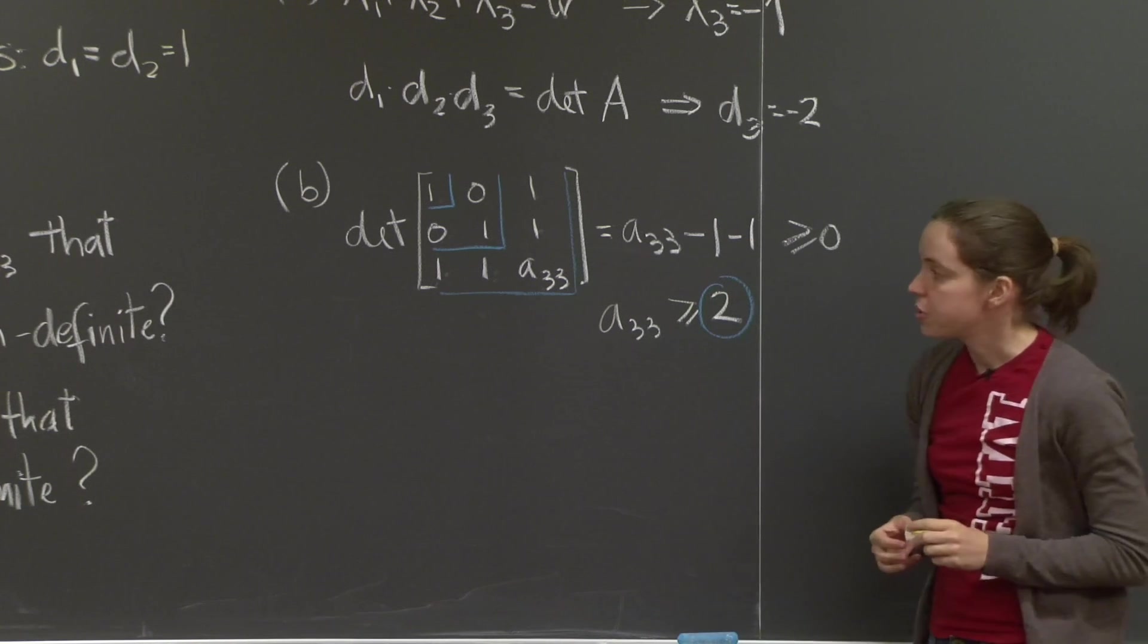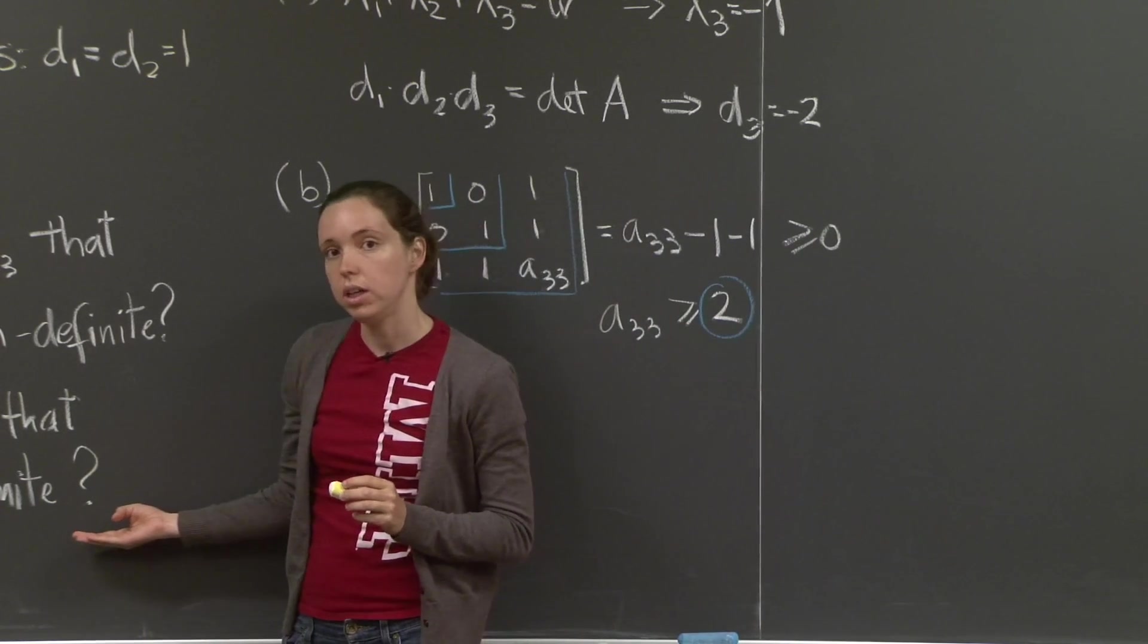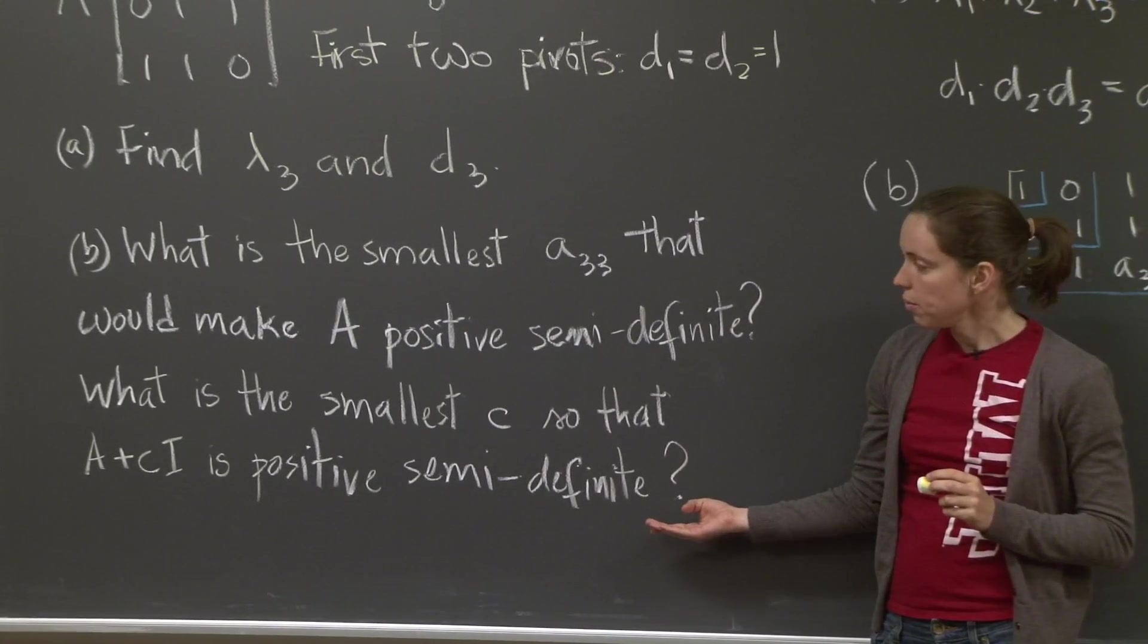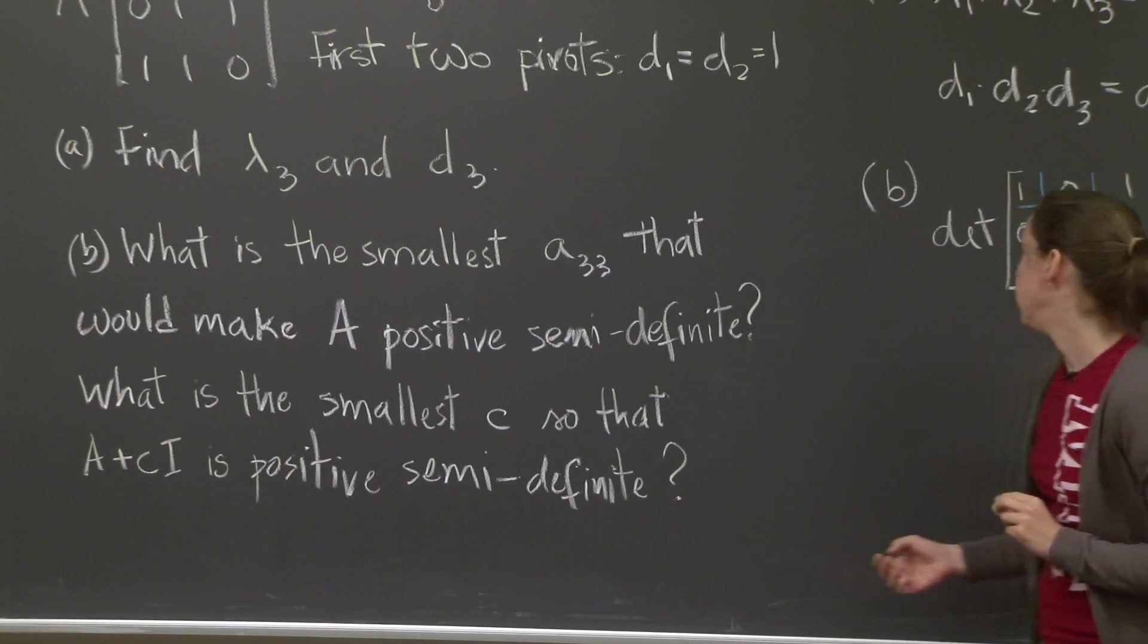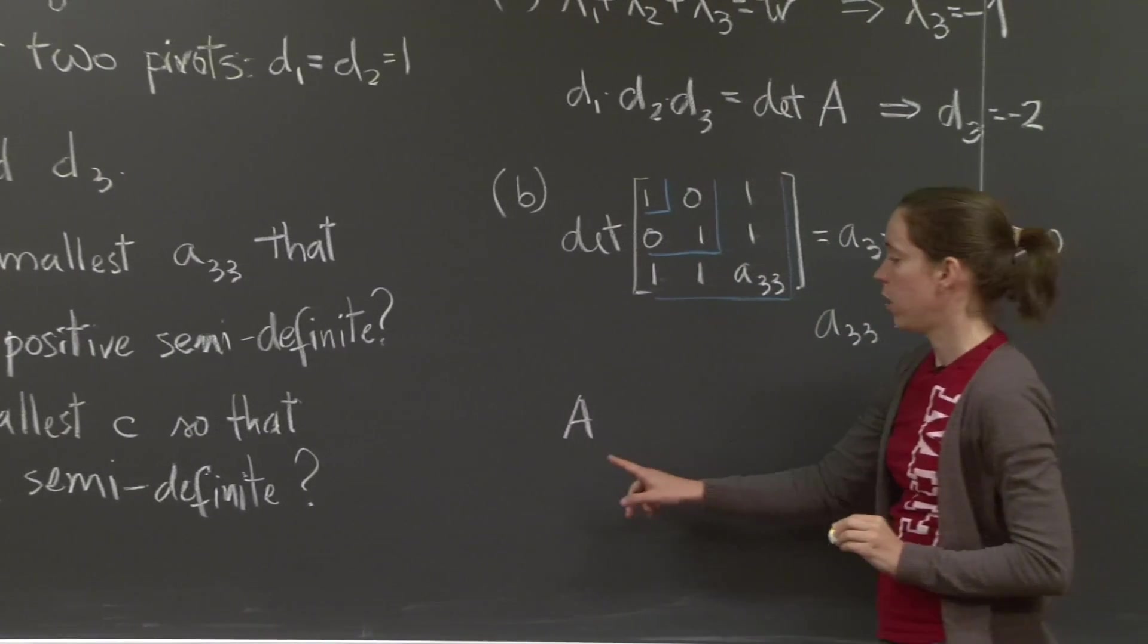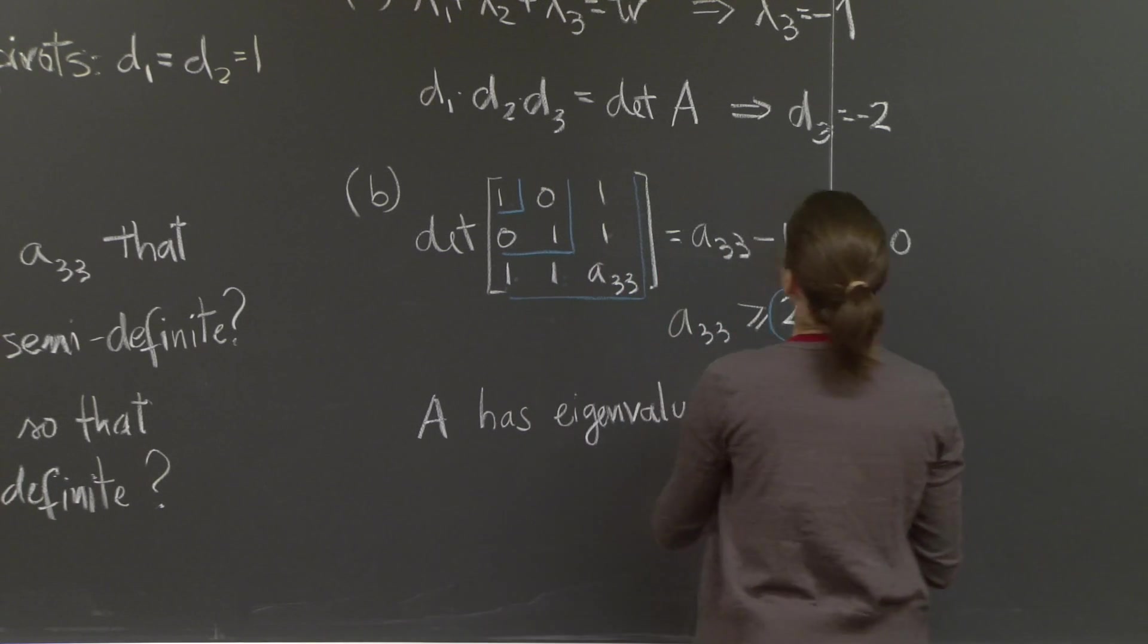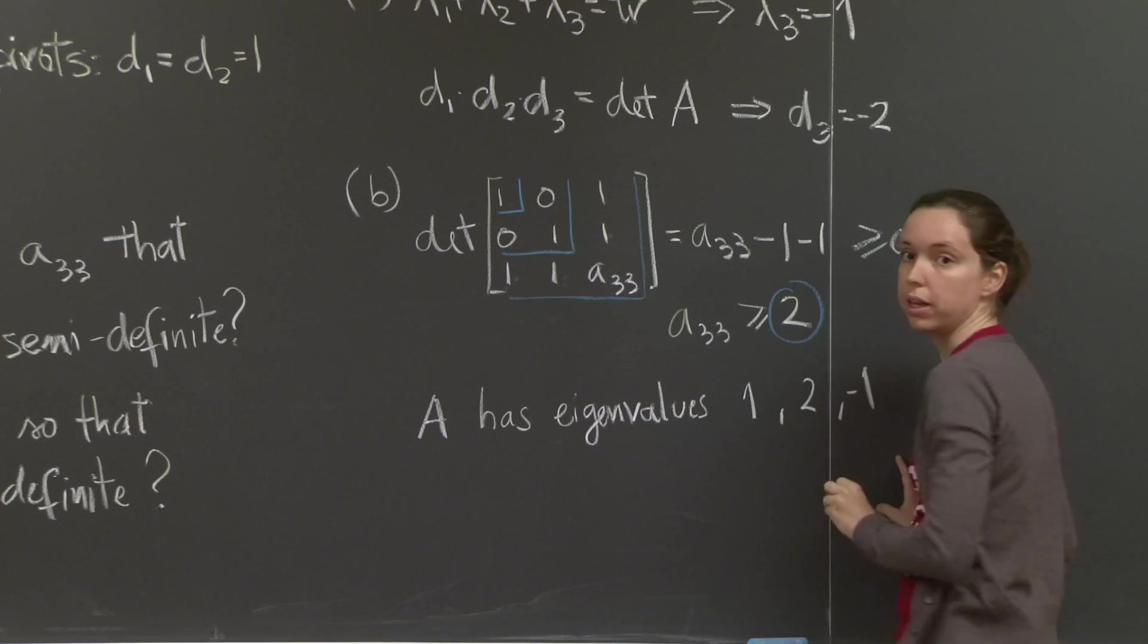There's another part to the question still, which is, what is the smallest c that will make the matrix A plus c I positive semi-definite? How should we do this? The quickest way is to do the eigenvalue test. A has eigenvalues 1, 2, and minus 1.